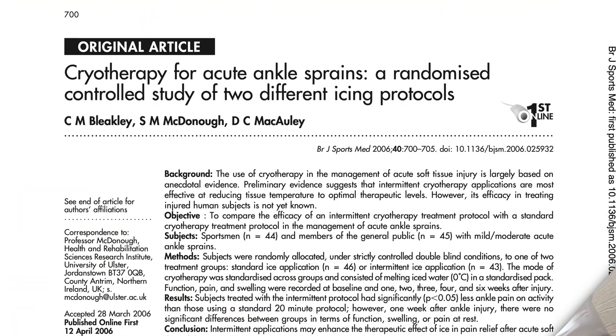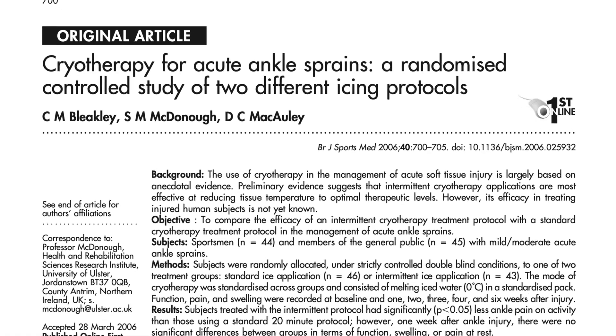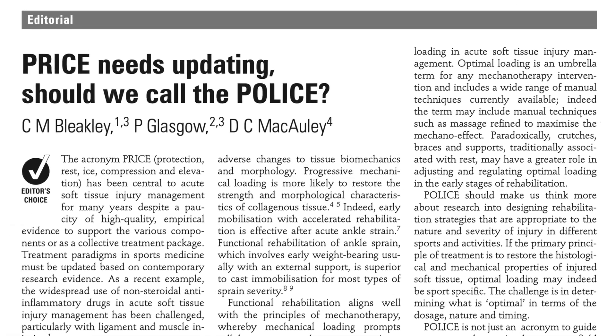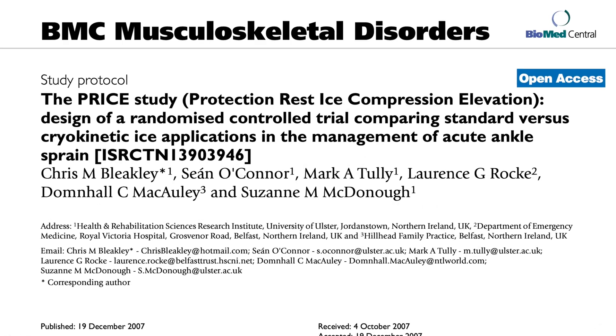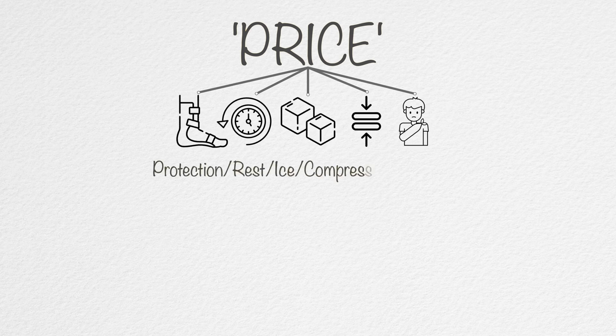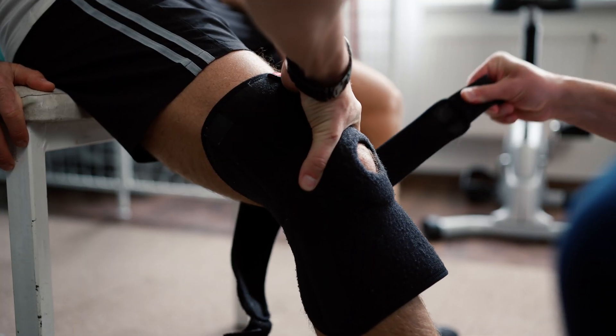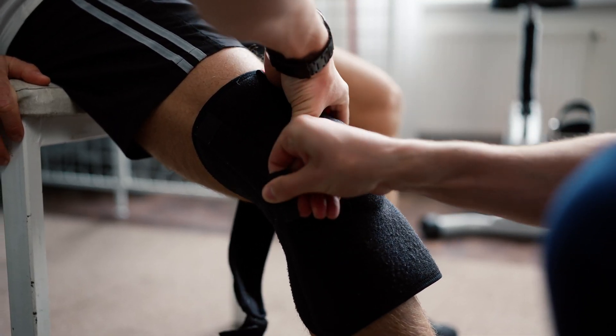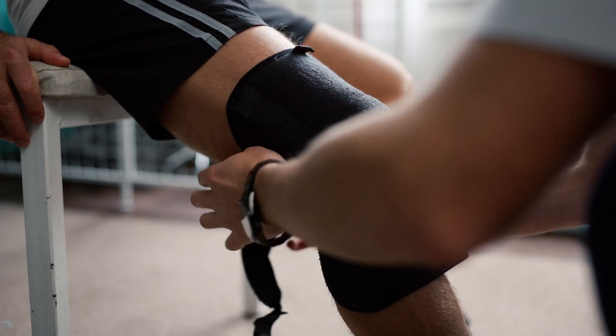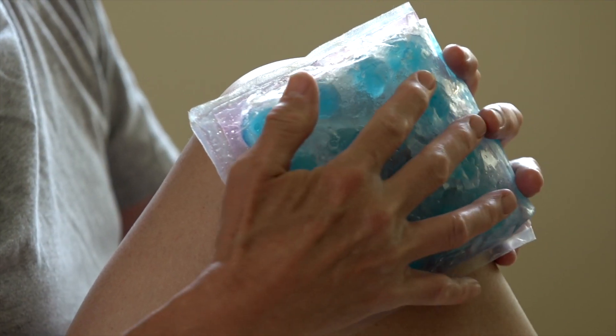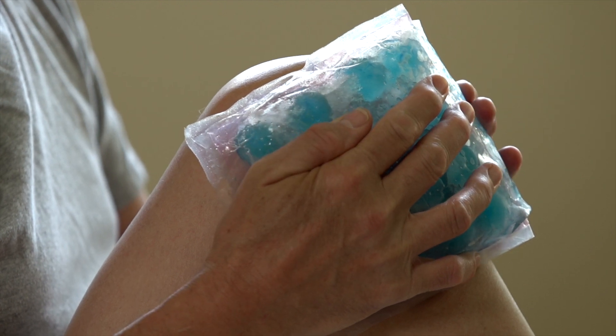The guiding principles for the acute management of ligament injuries are nicely summarized in the acronyms PRICE, POLICE, and PEACE and LOVE. PRICE — Protection, Rest, Ice, Compression, Elevation — is used immediately after the injury. Protection refers to shielding the injured ligament from further damage, followed by gradual reintroduction of movement. Ice is applied for 15-20 minutes every 2-3 hours to manage pain and swelling. Compression helps control swelling and movement, while elevation aids in reducing swelling by improving venous return.